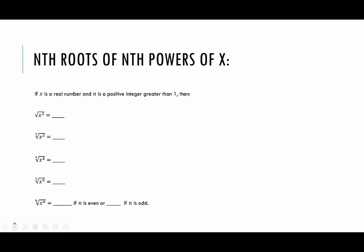So to start, we're going to assume x is a real number and n is a positive integer greater than 1. Then we want to think about what each of these would be.